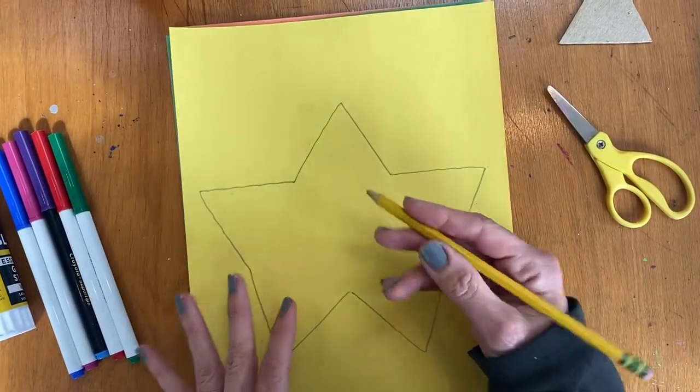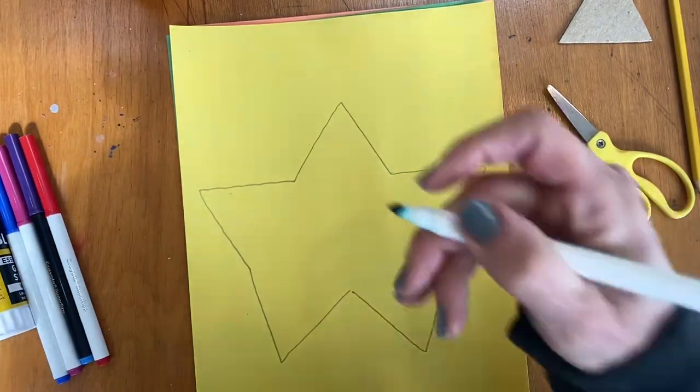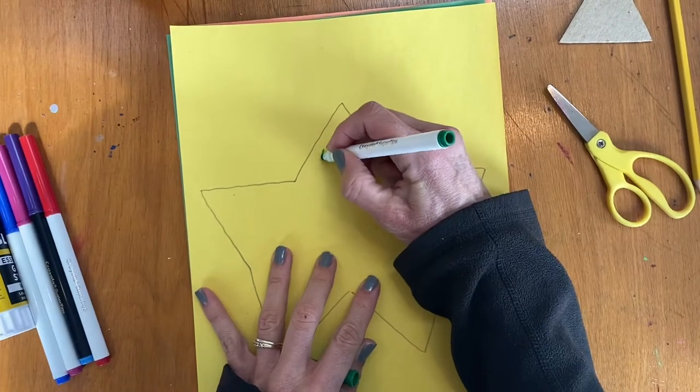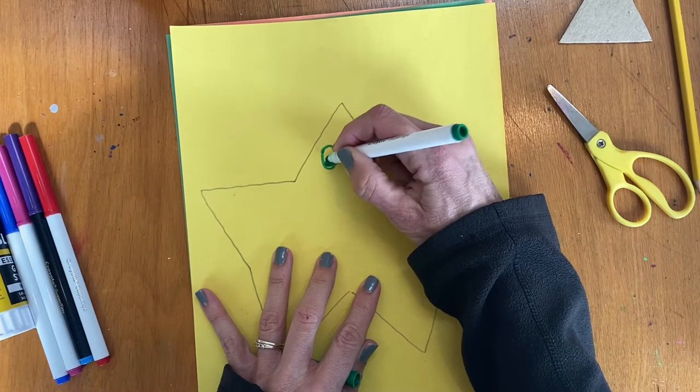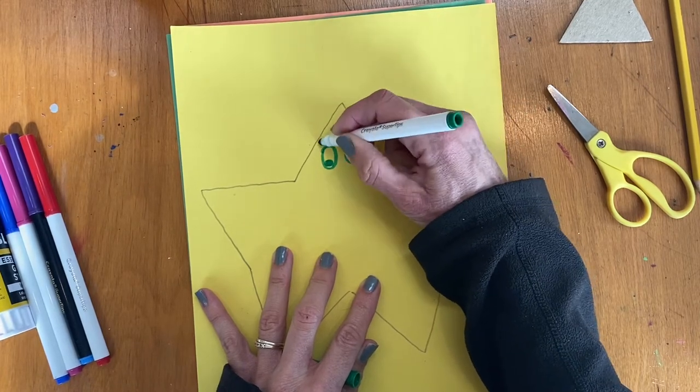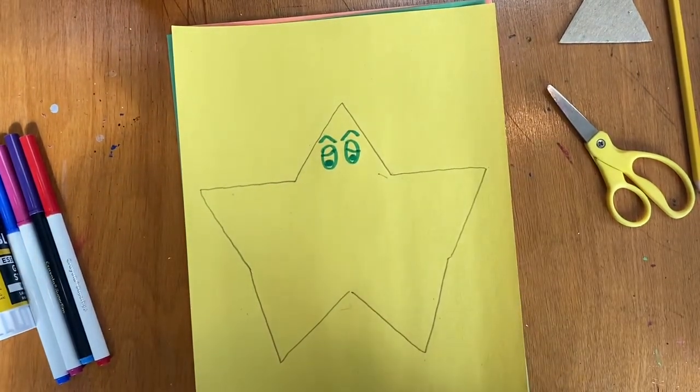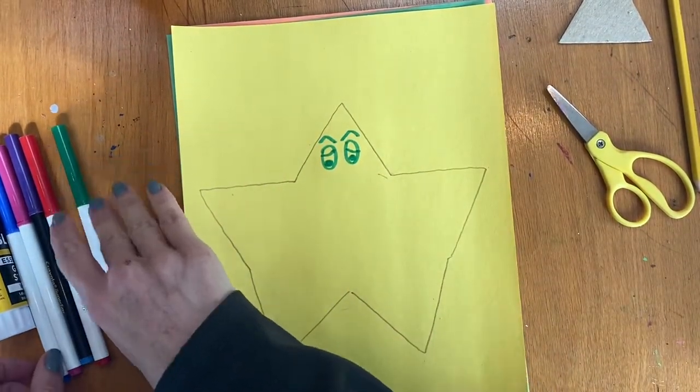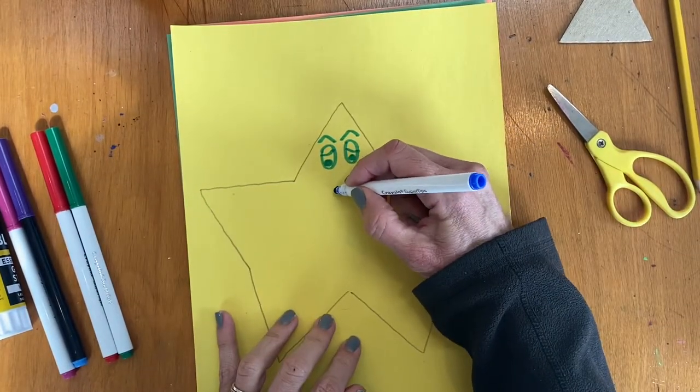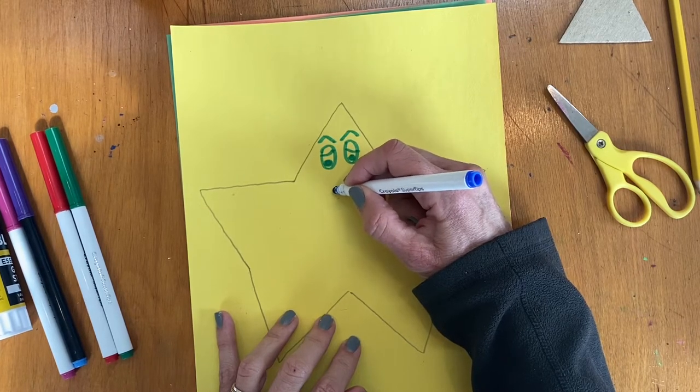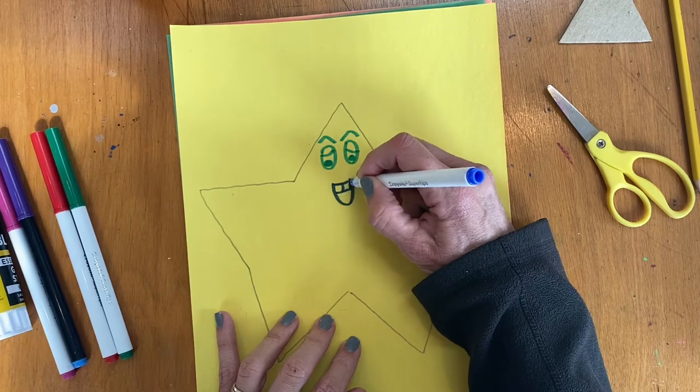Now we can take this star and you can use markers or crayons or colored pencils and make it into a person. So you can put some eyes on there, you could even do eyebrows, eyelids. You could put some sunglasses on there if you wanted to make it look like a rock star wearing sunglasses. We can give him a smile. And if he's singing, we can give him an open mouth so we can tell that he's singing. Give him some teeth.